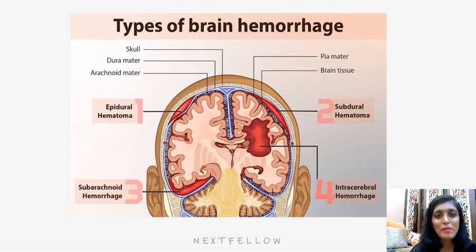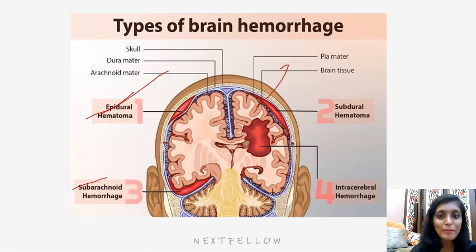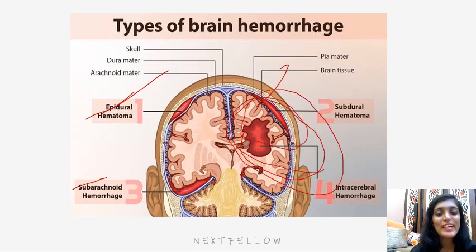Talking about different types of brain hemorrhage: the first is epidural hematoma, where there is bleeding outside the dura mater; subdural is below the dura mater; subarachnoid space is below the arachnoid mater where CSF lies usually; and the fourth one is intracerebral hemorrhage, which is bleeding into the brain parenchymal tissue.